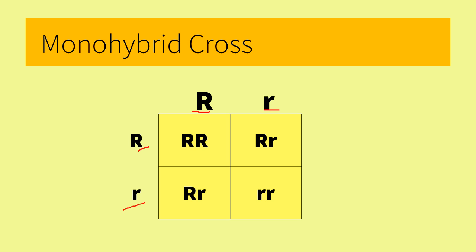Inside the box now are three possible genotypes: big R, big R; big R, small r; and small r, small r. The recessive trait has reappeared in the F2 generation.